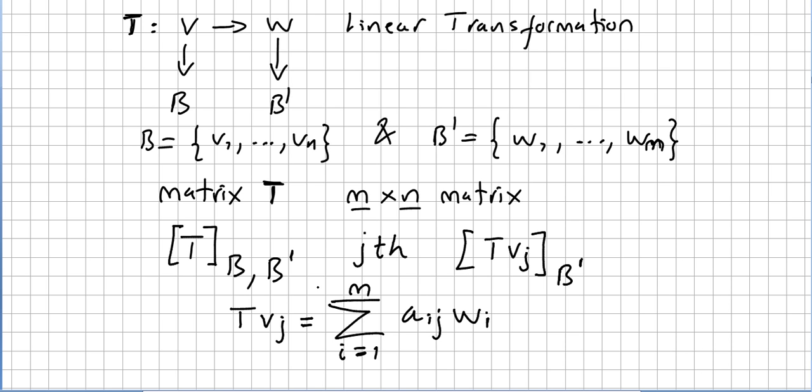This matrix transformation from base B to base B prime will be what will be at the end of the day, if you prefer to write it this way, Aij.